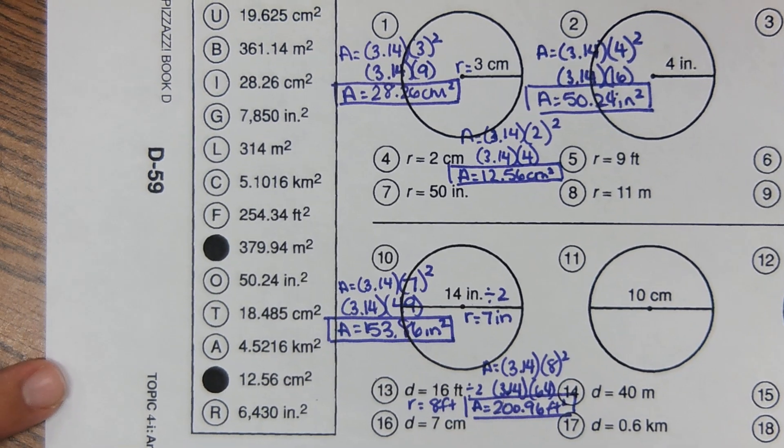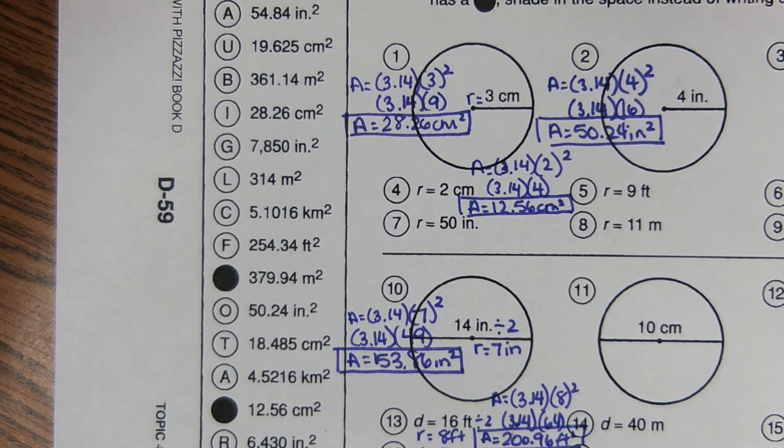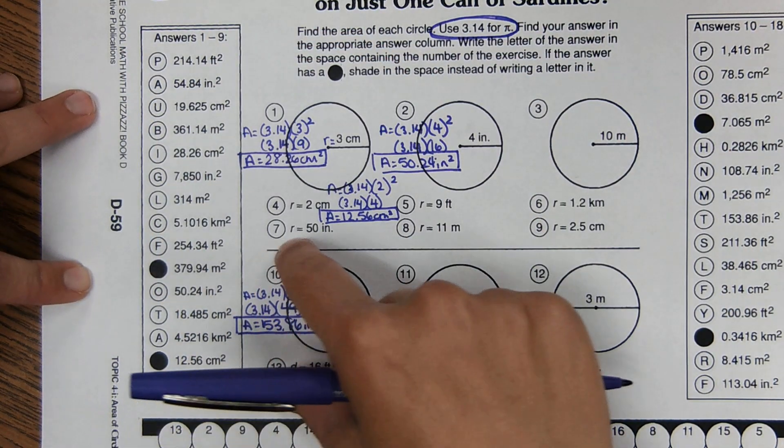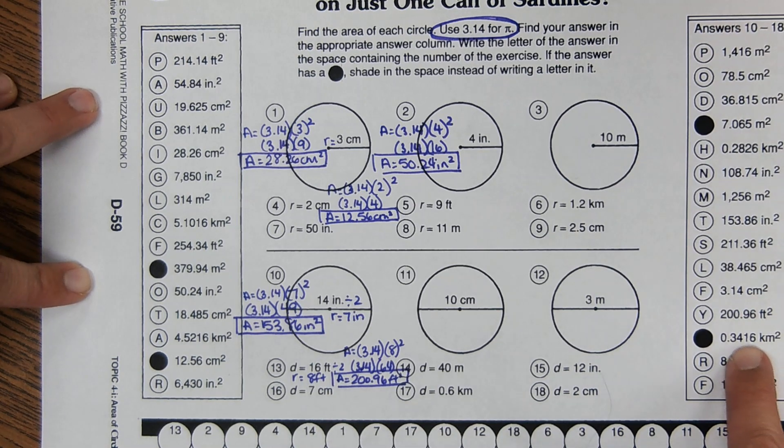And then also just a way to check your work as you go is to fill out the puzzle. So I'm going to zoom out here so you can see the puzzle. All the top answers will be in this left column and all the bottom answers will be in this right column.